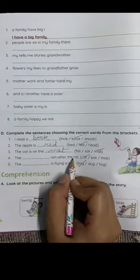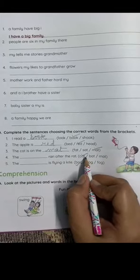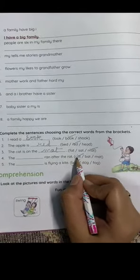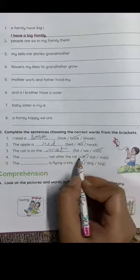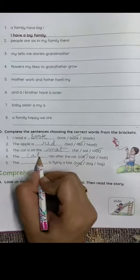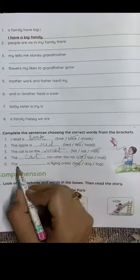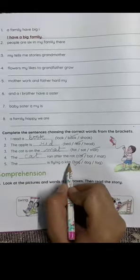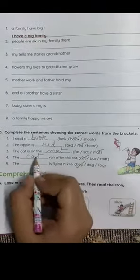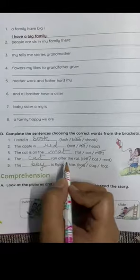The dash ran after the cat. The dash is flying a kite: boy, dog, or fog. The boy is flying a kite. These are the correct words.